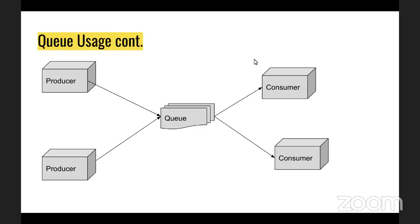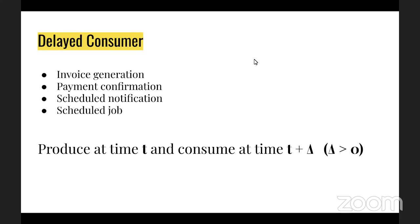Beyond a simple FIFO queue there's a priority queue. For example, you might want to schedule invoice generation after order/payment confirmation, send notifications at a specific time, or perform tasks with delayed execution — produce a message at time T but consume it at T plus some delta. This requires a priority queue where each task has its own priority or scheduled execution time.